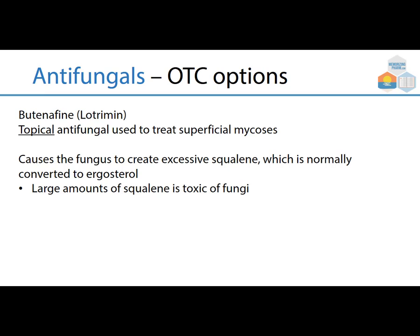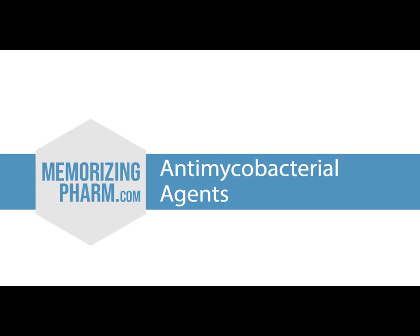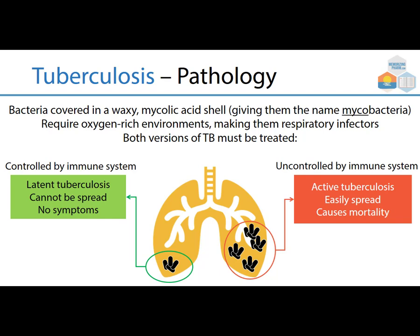Mycoses is a fancy way of saying fungal infection. Butenafine causes the fungus to create excessive squalene, which is normally converted to ergosterol, and large amounts of squalene are toxic to the fungi. Now, antimycobacterial agents — we're really talking about tuberculosis. TB bacteria are covered in a waxy mycolic acid shell, which gives them the name mycobacteria. They need oxygen-rich environments, so they infect the lungs as respiratory infectors.